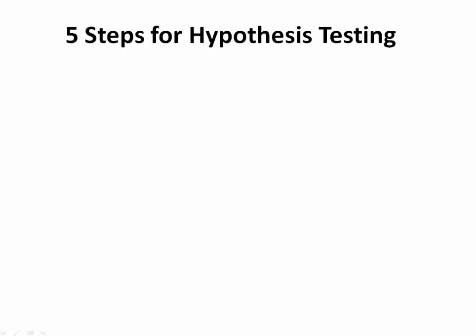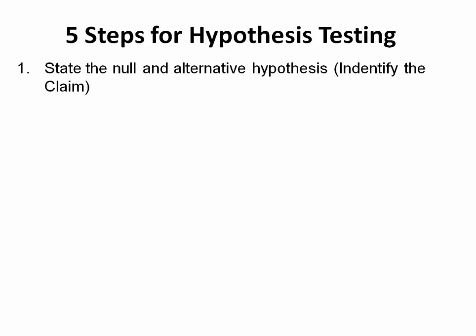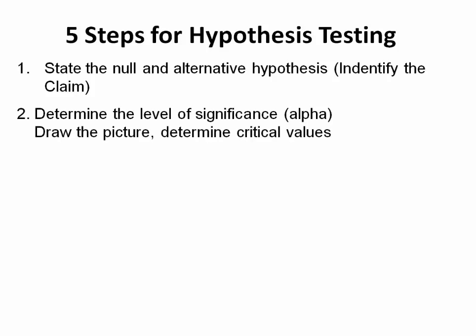In this series of lectures, we will walk through the five steps for hypothesis testing. The five steps include: state the null and alternative hypothesis, and when we state the null and alternative hypothesis, we will identify the claim. We will also determine the level of significance, which we call alpha.